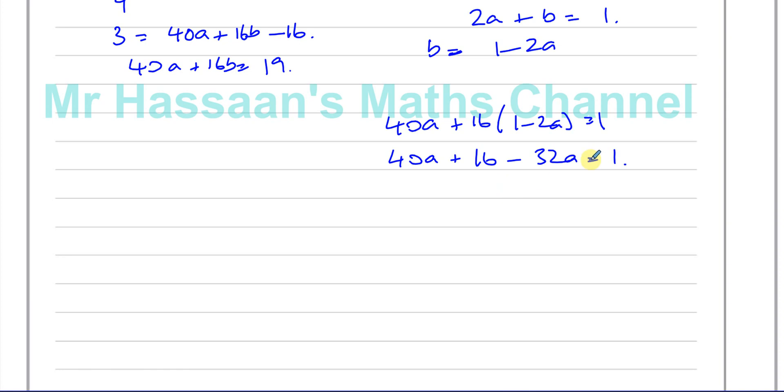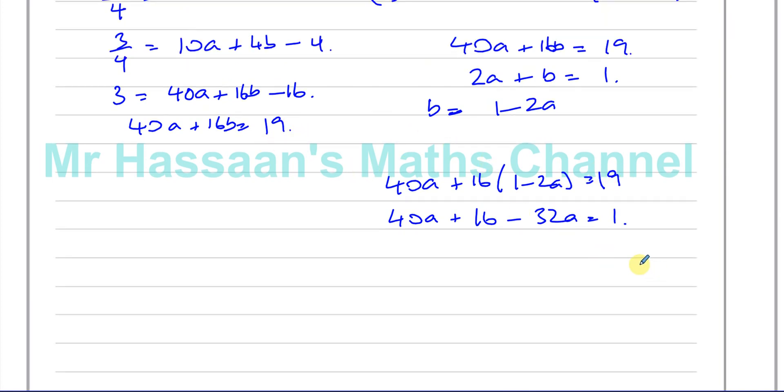So I have 40a plus 16 minus 32a equals 19. 40a minus 32a equals 19, sorry. So 40a minus 32a is 8a, and 19 minus 16 is 3. So a is equal to 3 over 8.